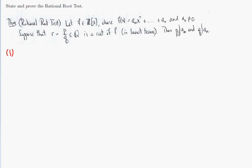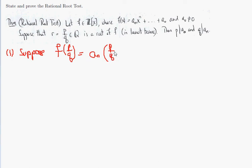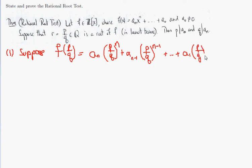Let's prove this. First, let's do the first part: that p divides a₀. Suppose that f(p/q) equals aₙ·(p/q)ⁿ plus aₙ₋₁·(p/q)ⁿ⁻¹ plus ... plus a₁·(p/q) plus a₀, equals 0. What I've written here is the polynomial f with x replaced by p/q.